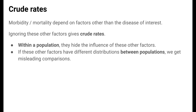Now that we've introduced some primary ways of measuring mortality, we'll discuss another immensely important topic in disease measurement: that of crude measures and adjusted measures. When talking about morbidity or mortality rates, it's important to recognize that these rates might depend on factors other than the disease of interest. Age is a major one of these factors. When we ignore the influence of other factors, what we calculate is called a crude rate.